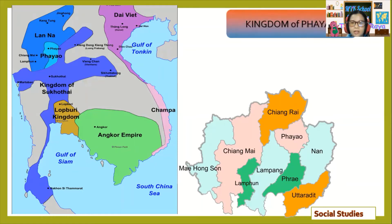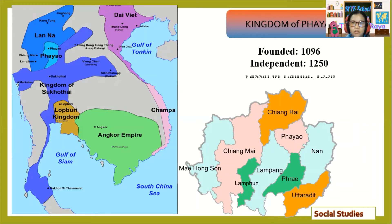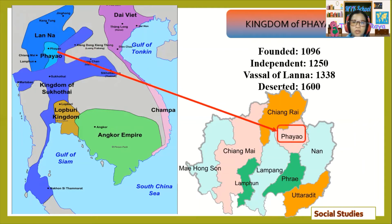Next kingdom: the Kingdom of Phayao. It was founded in the year 1096, became independent in 1250, became a vassal of Lanna in the year 1338, and was deserted in 1600. Phayao can be seen in the northern part of Thailand.